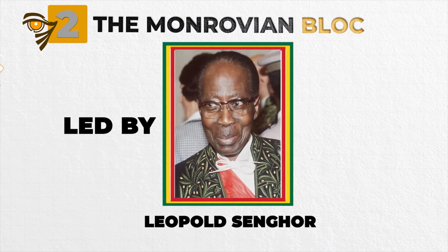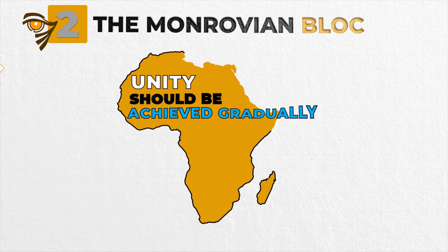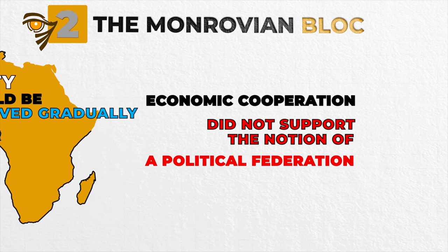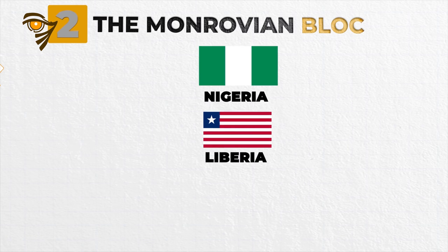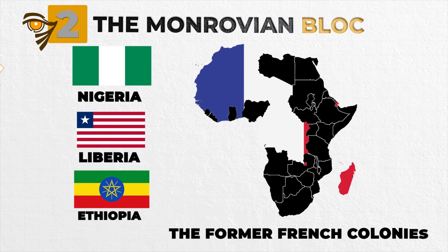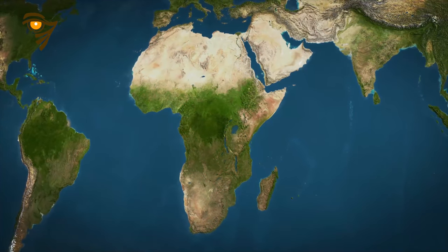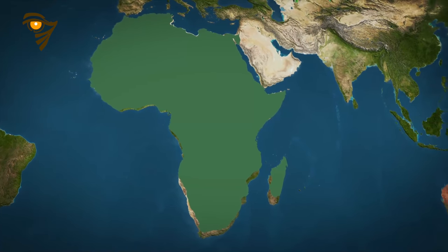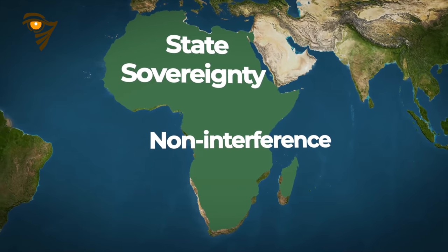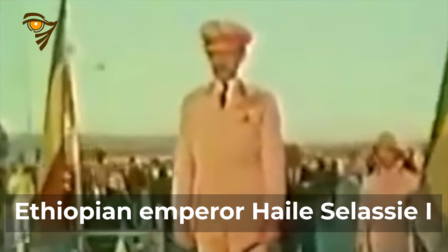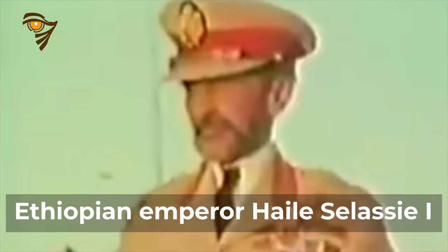Second was the Monrovian bloc, led by Leopold Senghor of Senegal, which felt that unity should be achieved gradually through economic cooperation and did not support the notion of a political federation. Its other members were Nigeria, Liberia, Ethiopia, and most of the former French colonies. Despite their antagonistic positions, both groups favored setting up an African institution based on the principles of state sovereignty and non-interference. The dispute was eventually resolved when Ethiopian Emperor Haile Selassie I invited the two groups to Addis Ababa, where the Organization of African Unity and its headquarters were subsequently established.